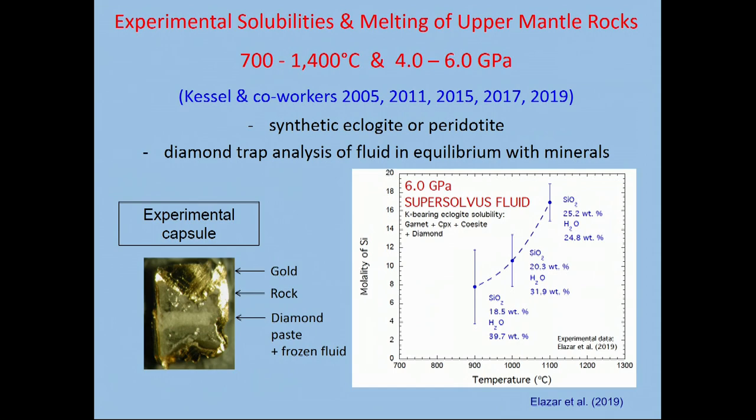This enabled us to work on analyzing far more complicated but interesting geological fluids, such as those measured by Ronit Kessel and co-workers over a period of years. You can see one example here is a fluid in equilibrium with a mafic eclogite containing garnet, clinopyroxene and coesite and diamond, and I'm just showing the concentration of aqueous silica in moles per kilogram of water here, but all the other chemical elements in the eclogite were measured as well.